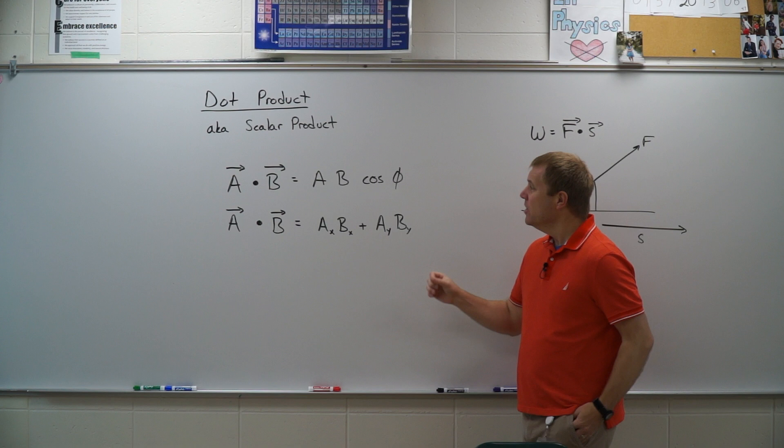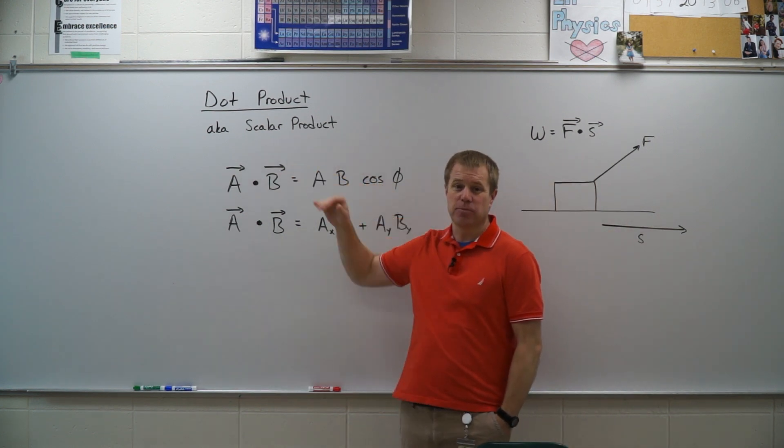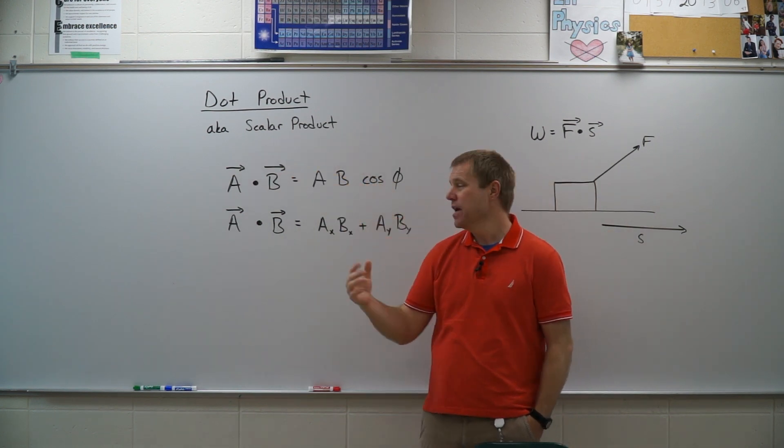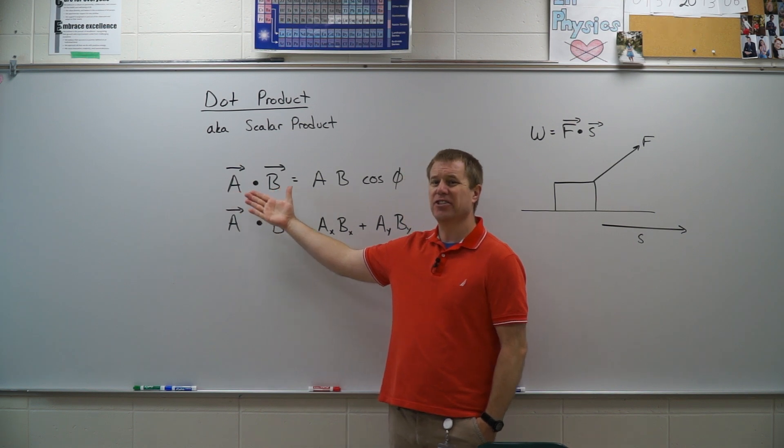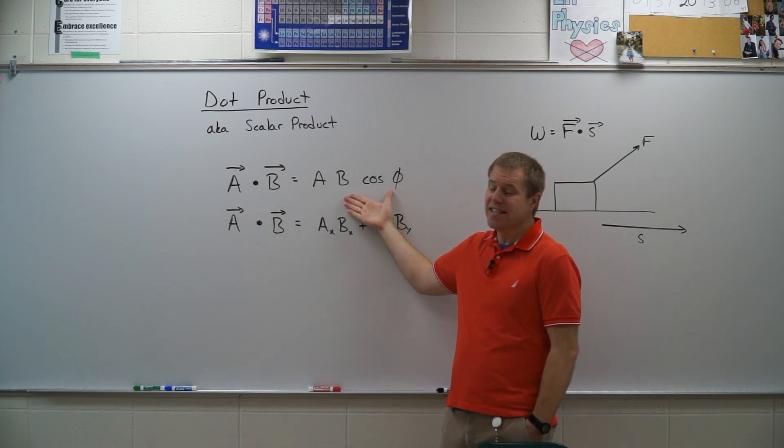Let's take a look at dot product. Also known as a scalar product, it means I take two vectors and multiply them together such that I end up with something that does not have direction. It is a scalar.